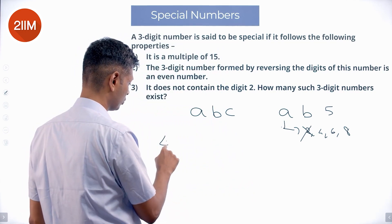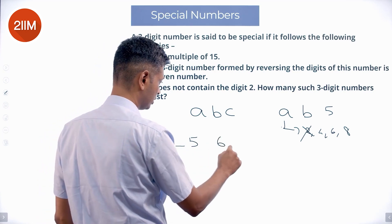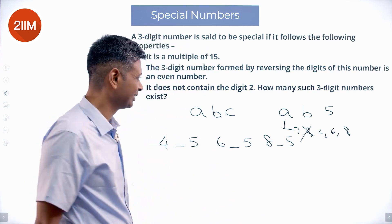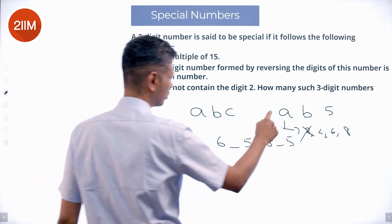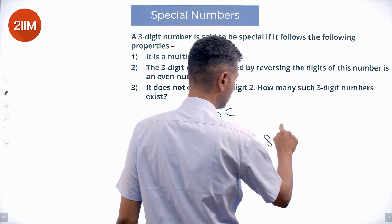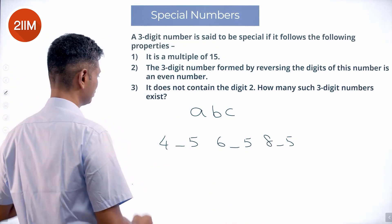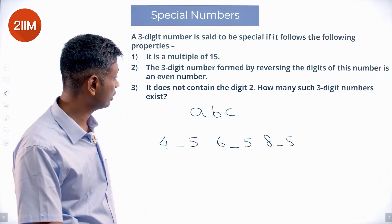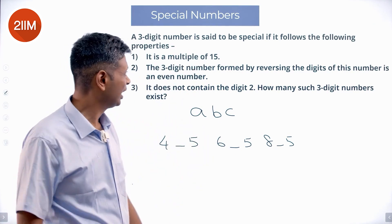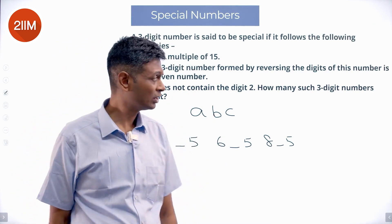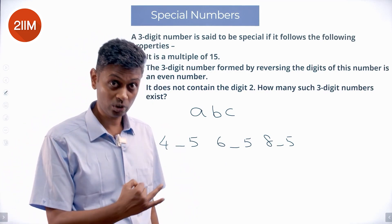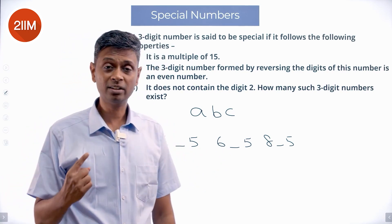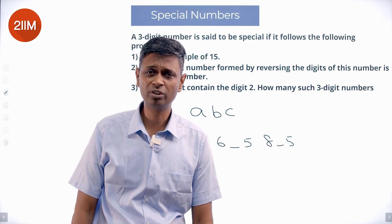We are dealing with numbers of the type 4-5, 6-5, and 8-5. That is it. So three numbers, three types of numbers. 4-5, 6-5, 8-5. We have accounted for the fact that it has to be a multiple of 5. If you reverse the digit, it's an even number. That is done. It does not contain the digit 2. It has been accounted for. We should remember that this cannot be 2.